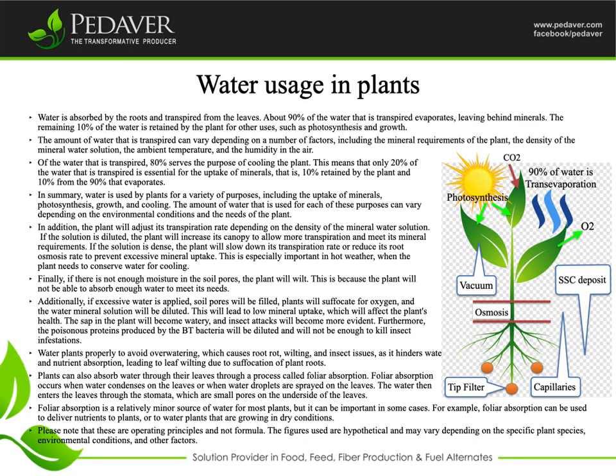Water is absorbed by the roots and transpired from the leaves. About 90% of the water that is transpired evaporates, leaving behind minerals. The remaining 10% of the water is retained by the plant for other uses, such as photosynthesis and growth.